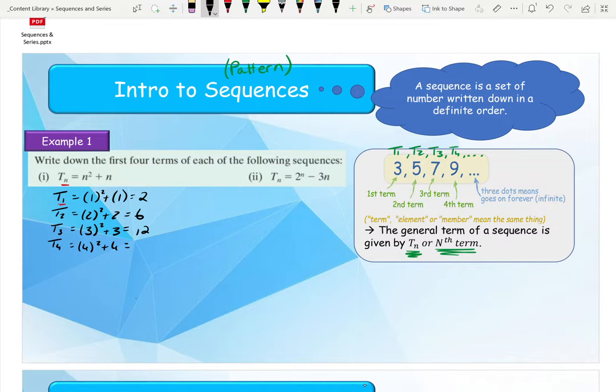And we sub in a 4 everywhere we see an n for term 4 and that gives me 20. Now we write out our pattern 2, 6, 12, 20 as our number sequence and that answers that question.